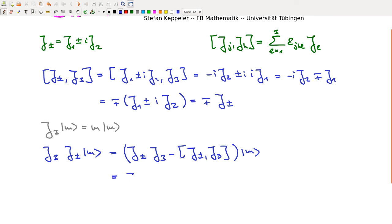Now, we have J plus minus and J3 times M. That's M times M. And here we have the commutator which we just calculated up here. So we get a plus minus J plus minus times M. And in total, that's M plus minus 1 times J plus minus M.